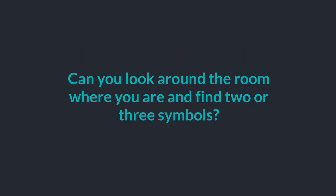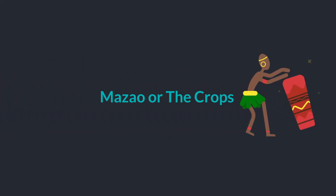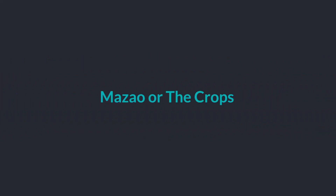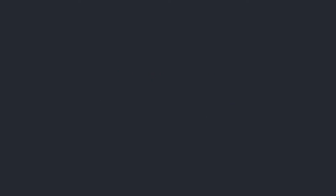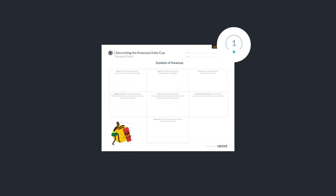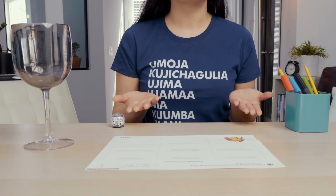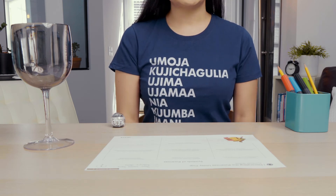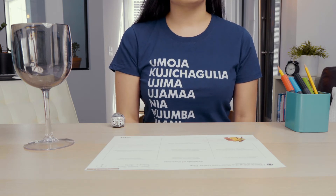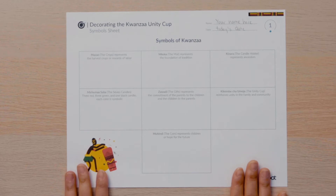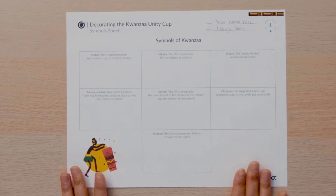Can you look around the room where you are and find two or three symbols? Now it is time to learn about the seven symbols of Kwanzaa. Please take out your Decorating the Kwanzaa Unity Cup symbol sheet, a pencil, and something to color with — either crayons, markers, or colored pencils.